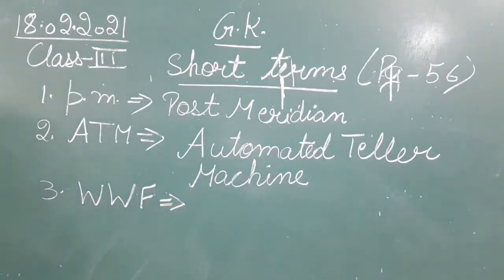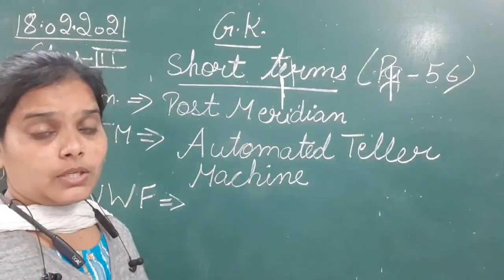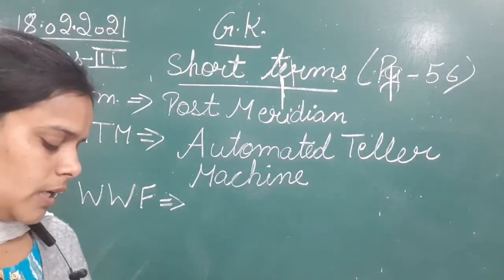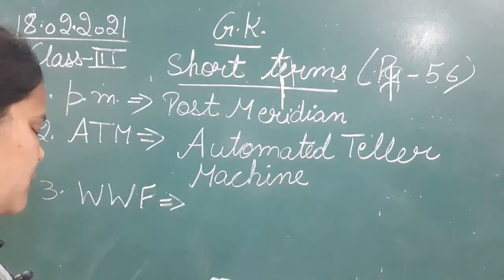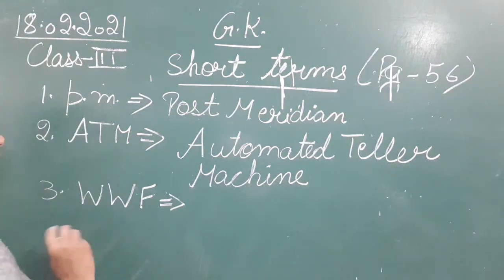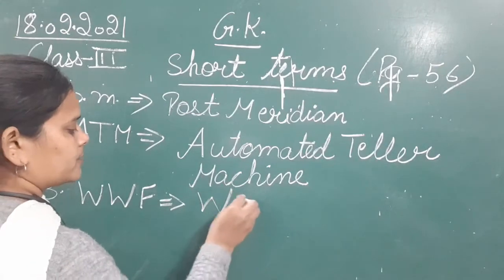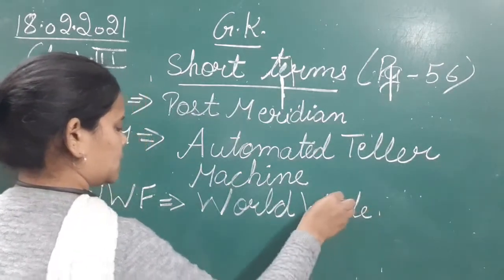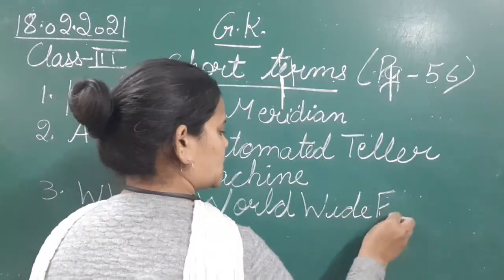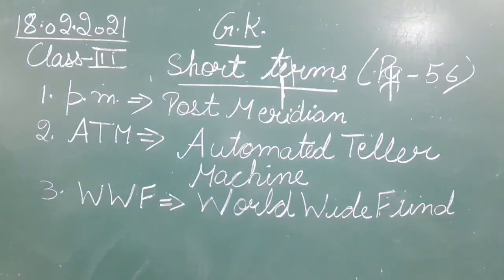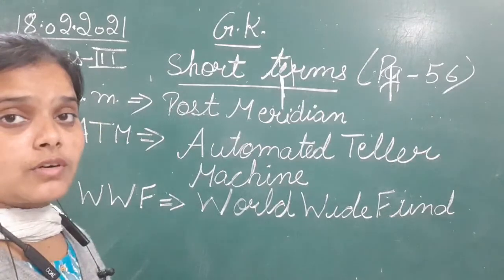Moving next to the third, that is WWF. WWF doesn't mean wrestling — that is WWE. WWF is an organization that works for biological and natural reserves. The full form of WWF is 'Worldwide Fund for Nature'. This organization works for saving the environment and the natural habitat of animals.